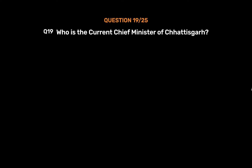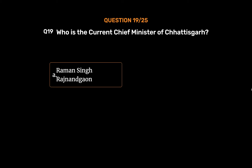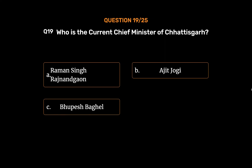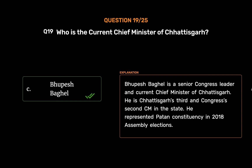Question No. 19: Who is the current chief minister of Chhattisgarh? Option A: Raman Singh, Rajnandgaon. Option B: Ajit Jogi. Option C: Bhupesh Baghel. Option D: None of these. The correct answer is Option C: Bhupesh Baghel. Bhupesh Baghel is a senior Congress leader and current chief minister of Chhattisgarh. He is Chhattisgarh's third and Congress' second CM in the state. He represented Patan constituency in the 2018 assembly elections.